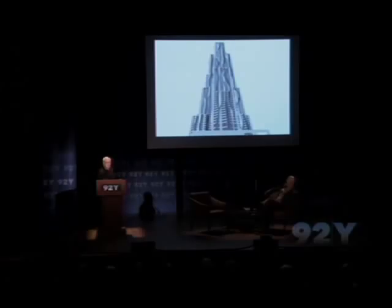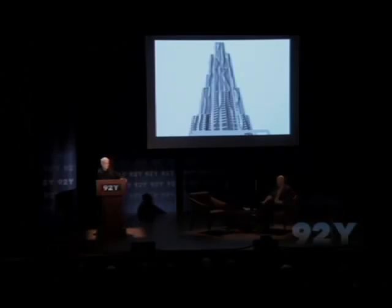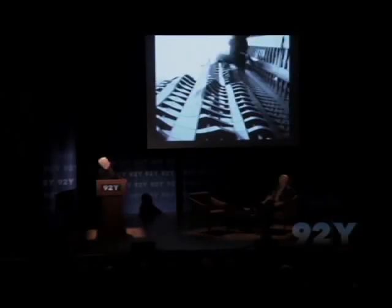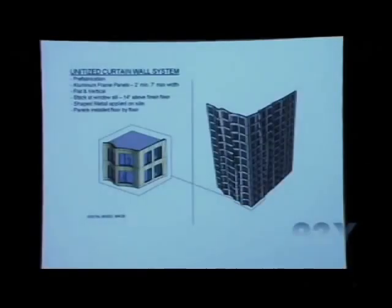Working with the subcontractors and the computer technology, we were able to build this building within the pro forma of a normal economic package that an apartment building in New York requires. Working with this very elaborate aircraft software made in France that we've adapted and modified for the construction industry allowed us to detail every piece of it, rationalize every piece of it so they could be built in real time for a real budget. The curtain wall finally came in at the same price as a normal flat curtain wall.